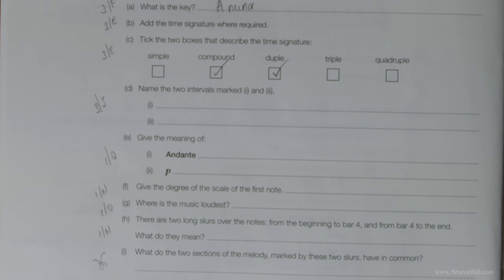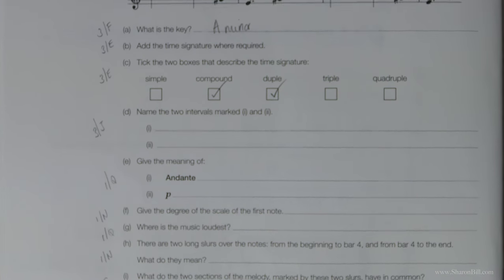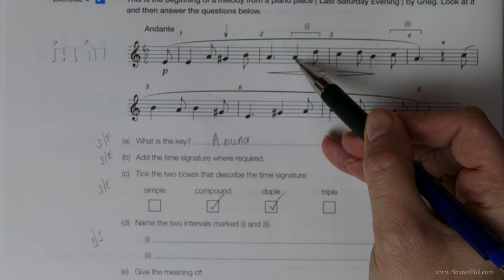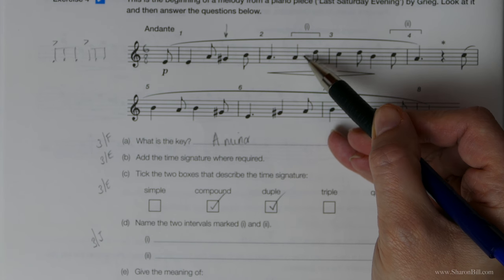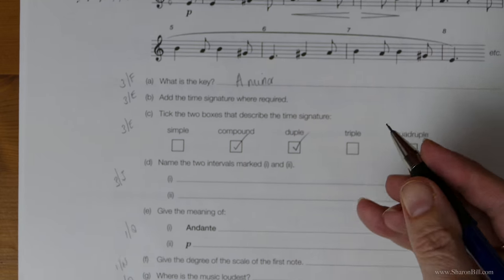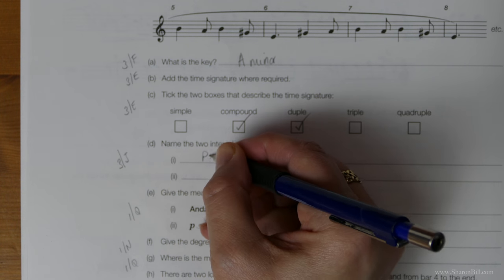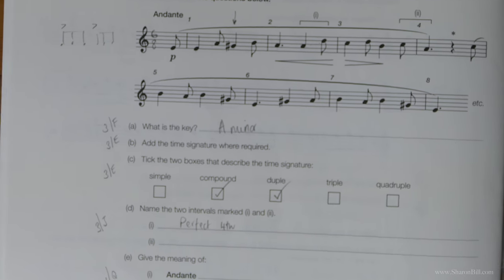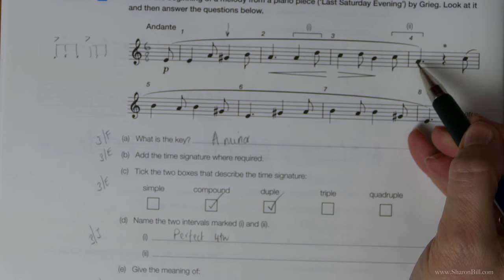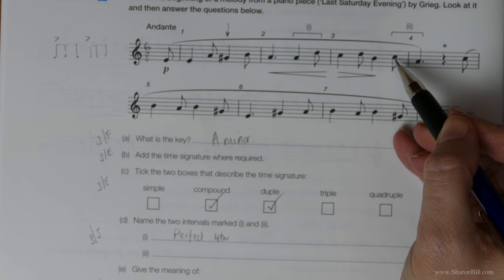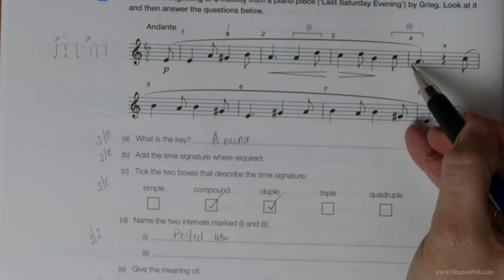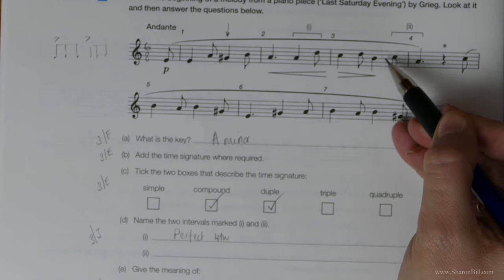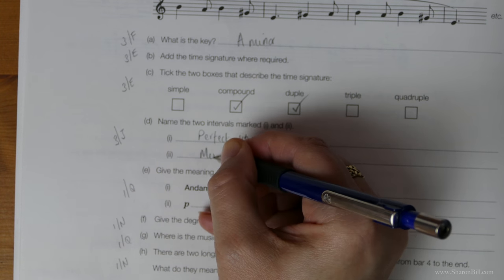So we've got some intervals to look at now. Look at interval 1 first of all. Our lowest note is A and we've got 1, 3, 4, a fourth and that's a perfect interval. So there's no more thinking there. That's a perfect fourth. Then our next one is 1, 2, 3, a third. Now A to C natural is part of the minor scale. If it was part of the major scale there'd need to be a C sharp. So that's a minor third.